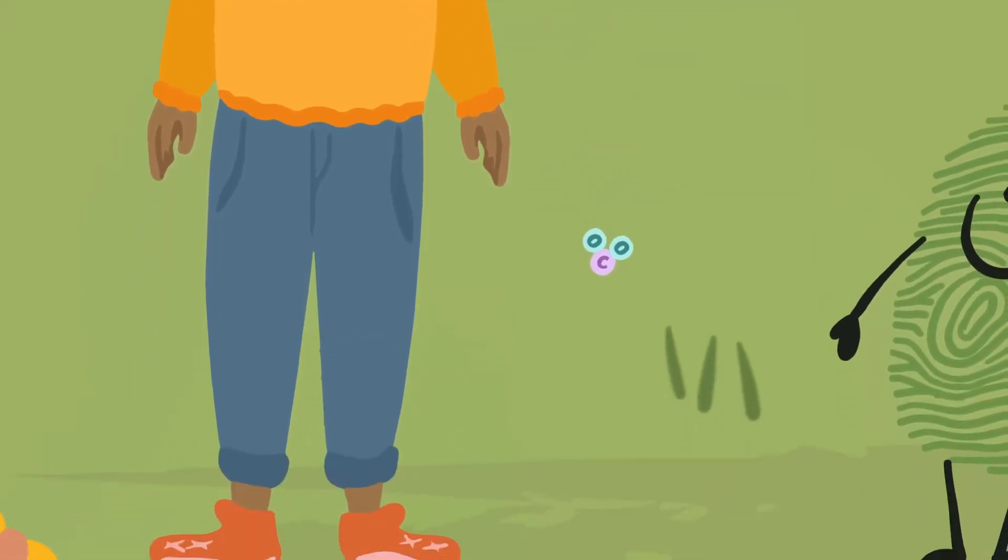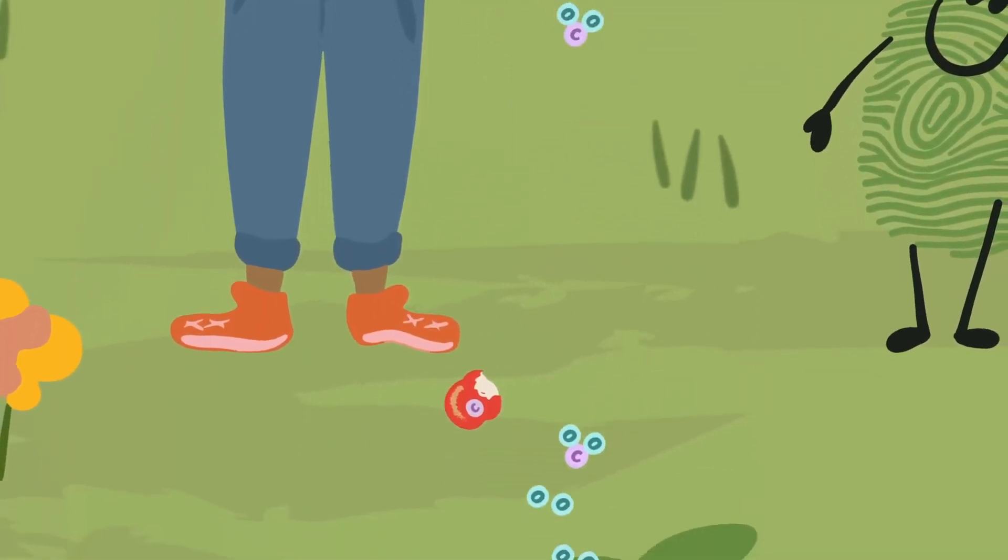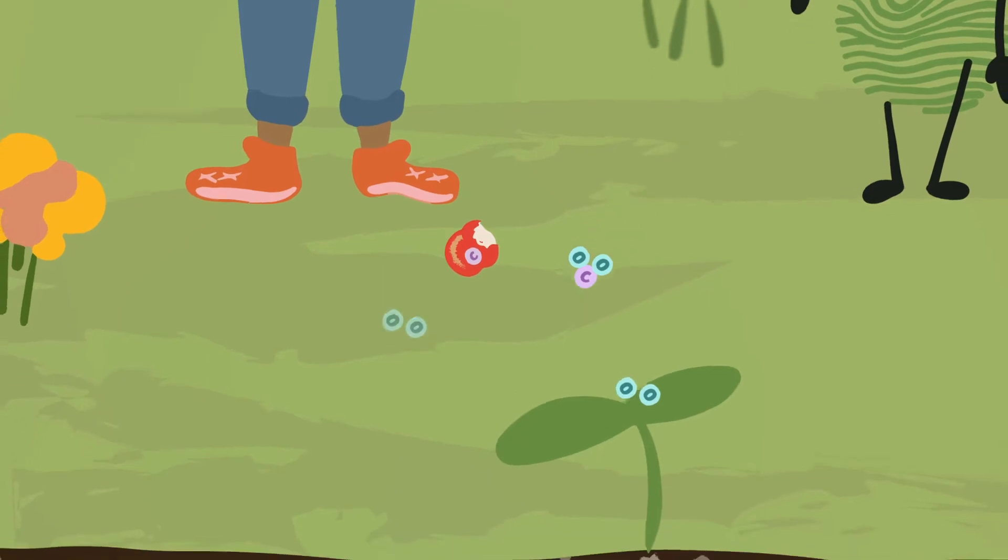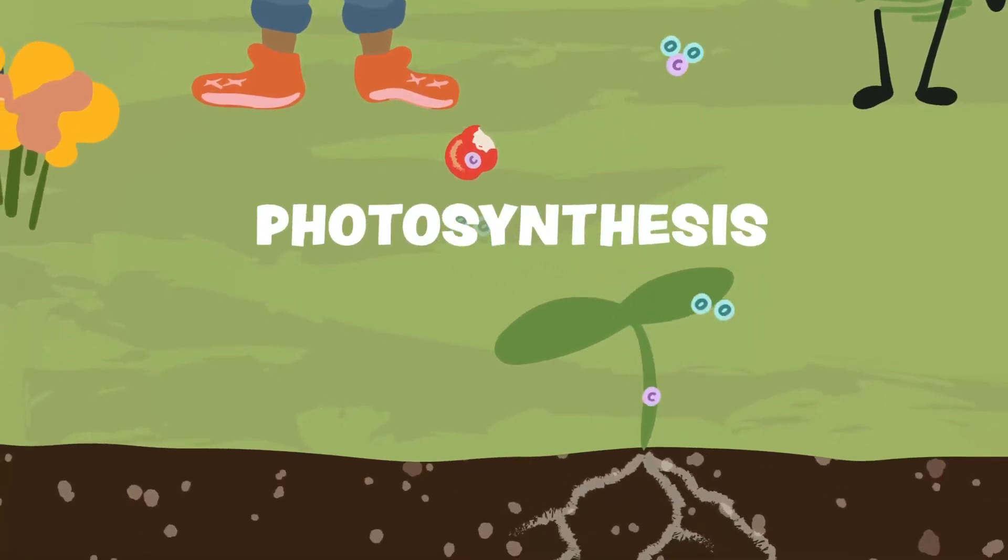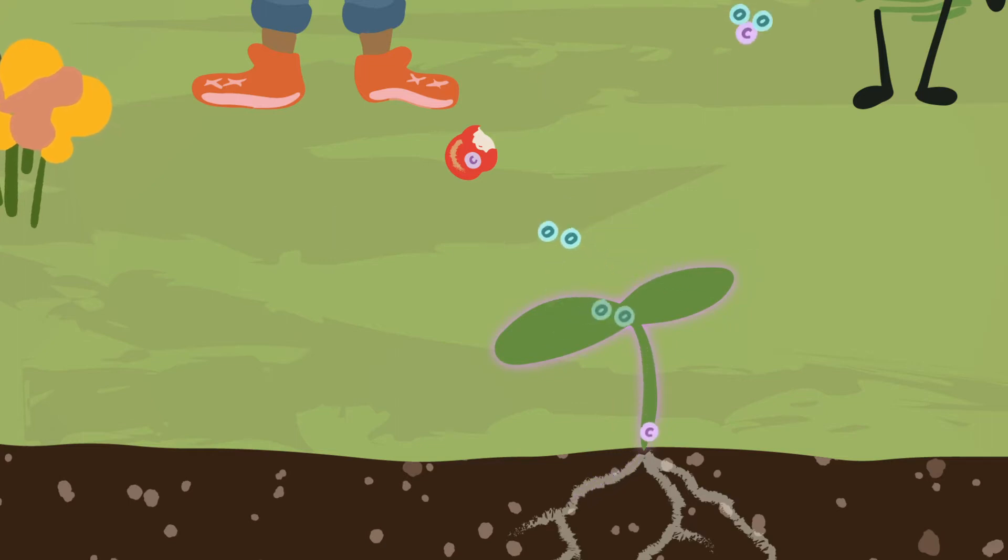Plants use this carbon dioxide from the air, along with sunlight and water, to make food during photosynthesis. Plants then store carbon in their leaves, fruits, seeds, and roots, which removes the carbon dioxide from the air and stores it in the soil.